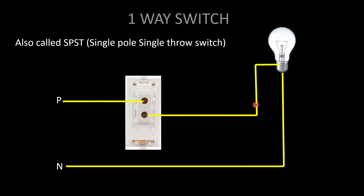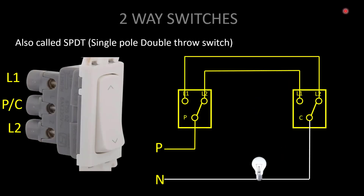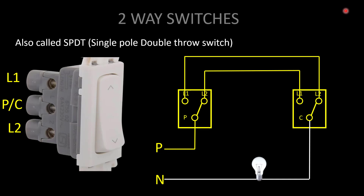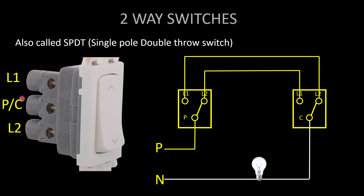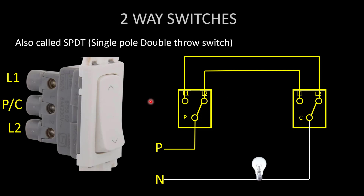Two-way switches are also called single pole double throw switches, used to control a light from two locations. The difference from a one-way switch is that a two-way switch has three terminals: L1, L2, and a phase or common terminal. In a one-way switch, there are only two terminals.